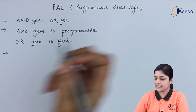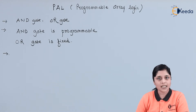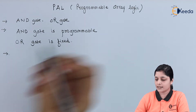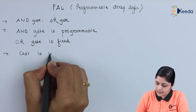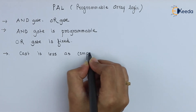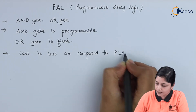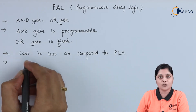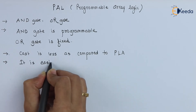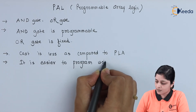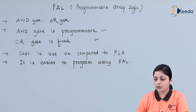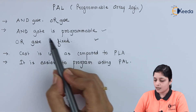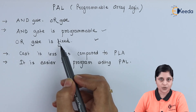It is easier to program PAL and the cost is less as compared to PLA. This is the most important feature — cost is less as compared to PLA and it is easier to program. So these are the most important points regarding Programmable Array Logic. While designing any circuit, the AND gate is programmable and the OR gate has to be a fixed one.